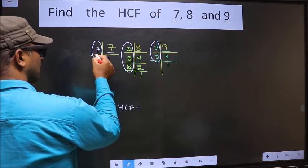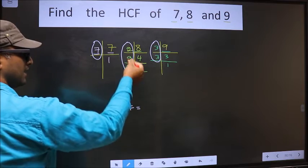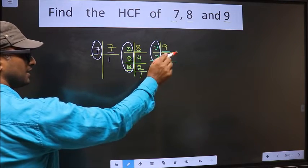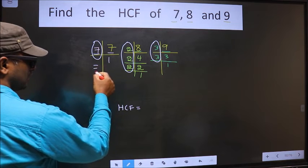Now let us find the numbers which are present in all three places. Starting with the number 7. Do we have 7 here? No. So no need to check in the other place. No more numbers are left.